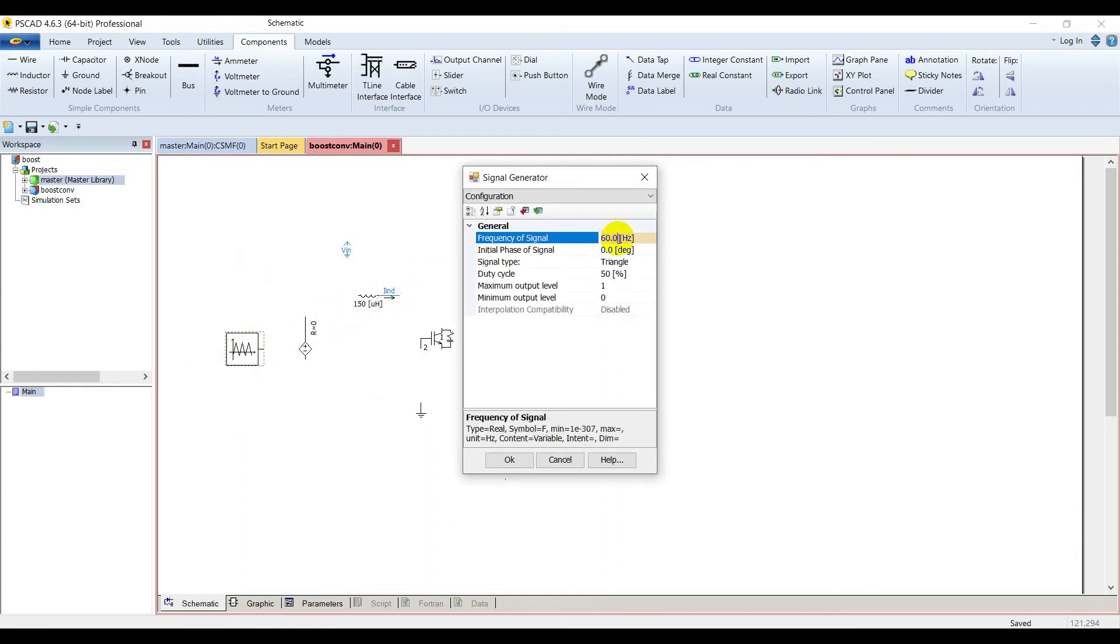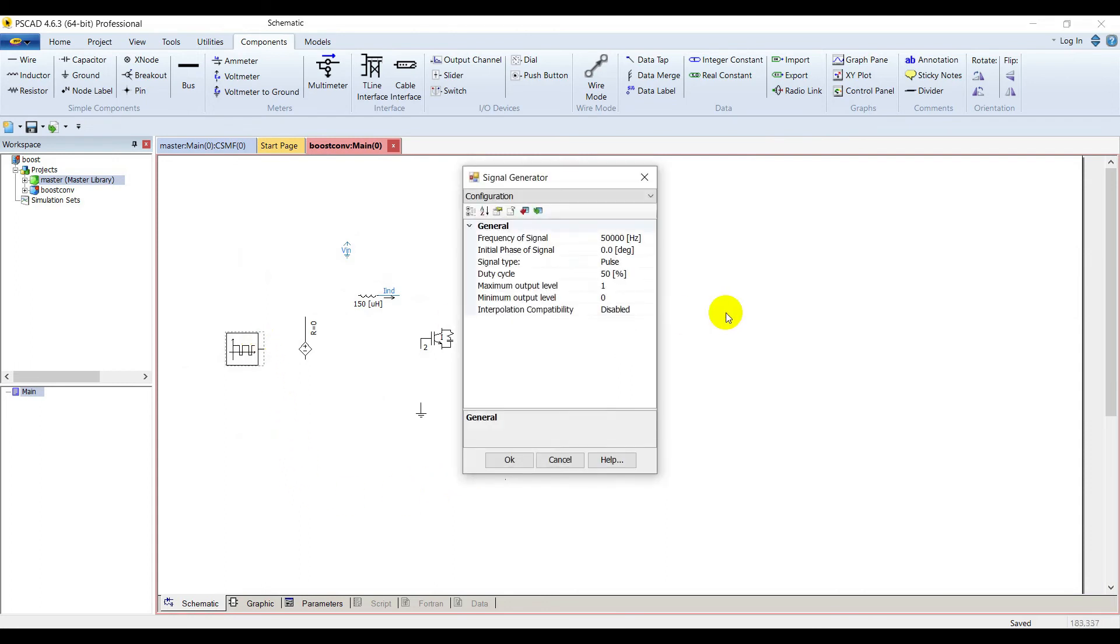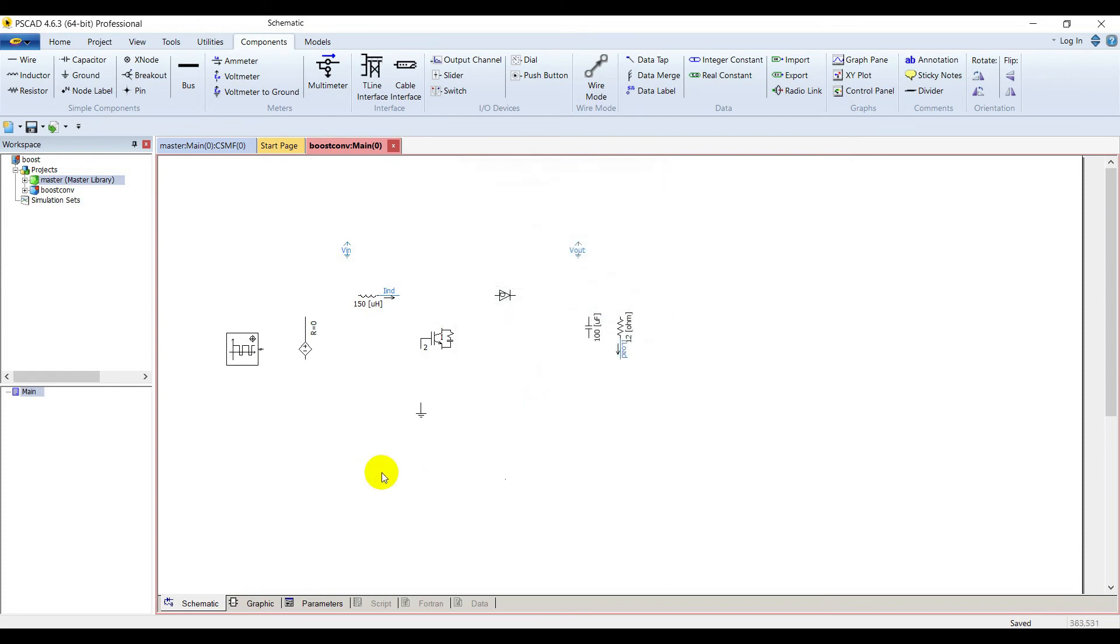Everything is now configured. Our switching frequency is 50 kilohertz. It will be a pulse and the duty cycle will be 50%, that's okay. Interpolation compatibility enabled. Now we are going to connect everything.